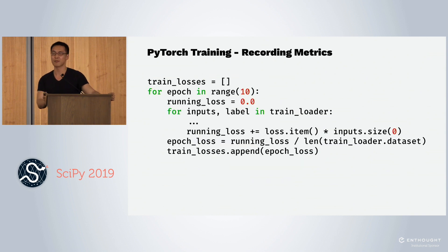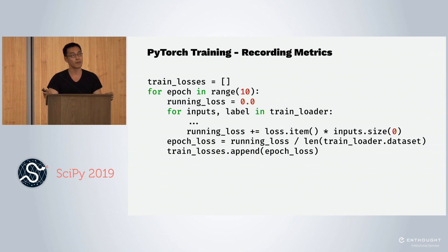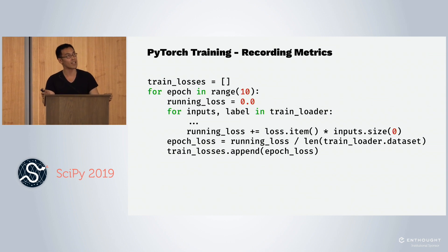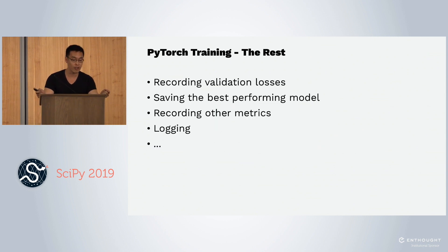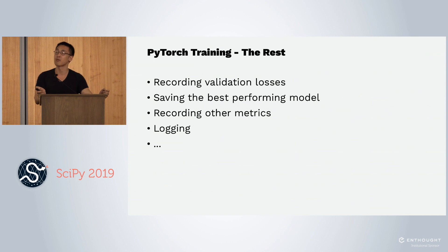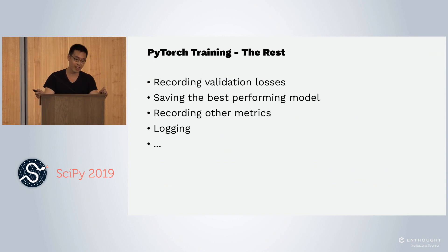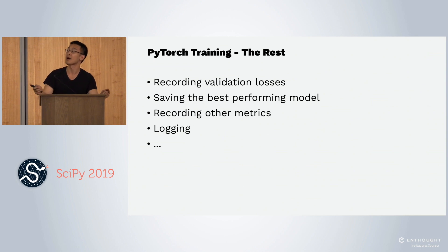But we want to record metrics, so we add code to record metrics. Being great data scientists, we like doing validation sets, so we write code for that too. We want to record metrics on our validation loss, do checkpointing, record other metrics, do logging. The list goes on and on of the things you do when you train a neural network.